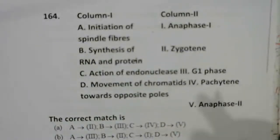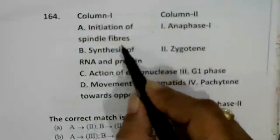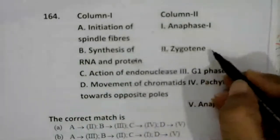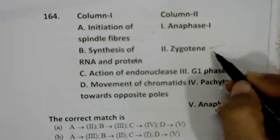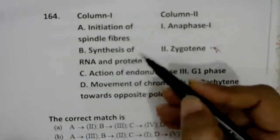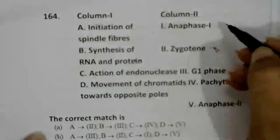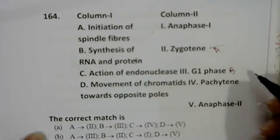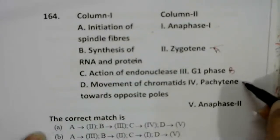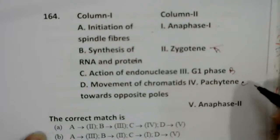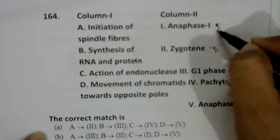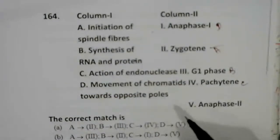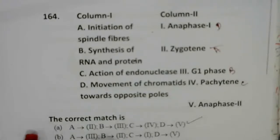Match column one with column two for meiosis stages. Initiation of spindle fibers occurs in zygotene. Synthesis of RNA and protein occurs in the zygotene/leptotene phase. Action of endonuclease occurs in pachytene stage. Movement of chromatids towards opposite poles occurs in anaphase. Answer: A2, B3, C4, D5 — option A.